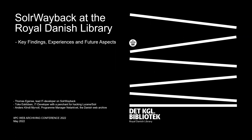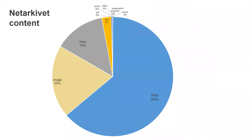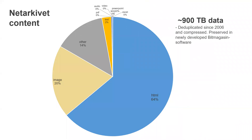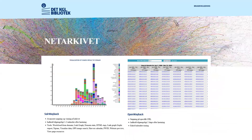Some background information. Since 2005, we have collected material from the Danish part of the internet. Today, the archive consists of more than 900 terabytes of data and 35 billion objects. In 2011, URL search was added with Open Wayback. In 2015, we had Full Text Search using Blacklight, but still with playback in Open Wayback. In 2021, Blacklight was replaced by Solar Wayback.